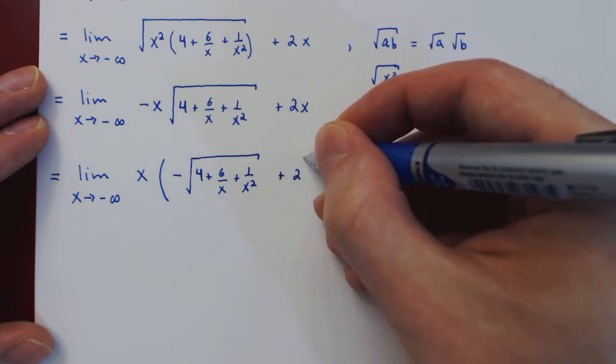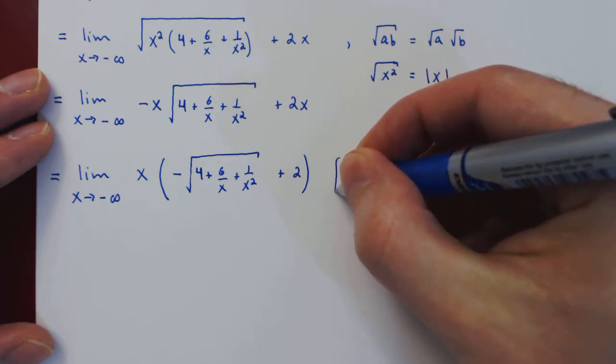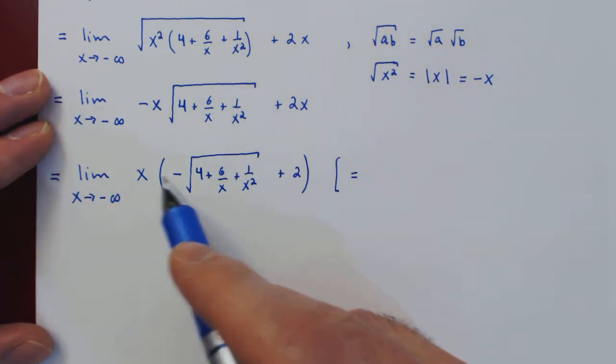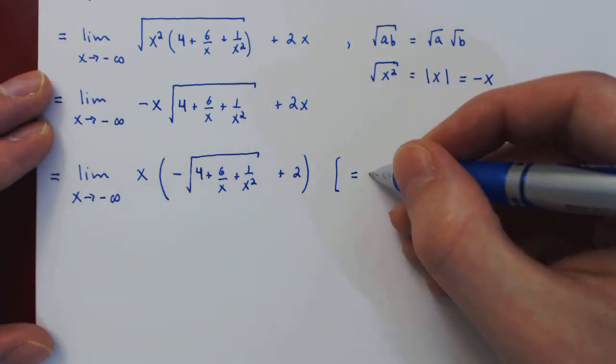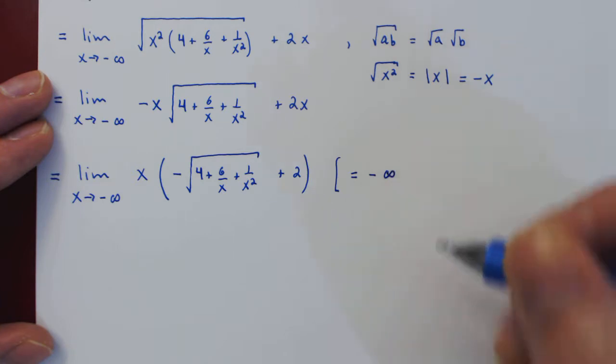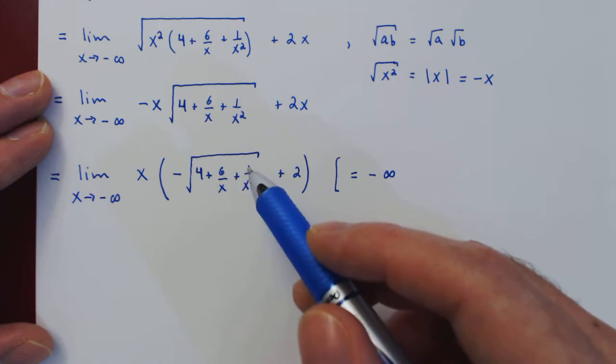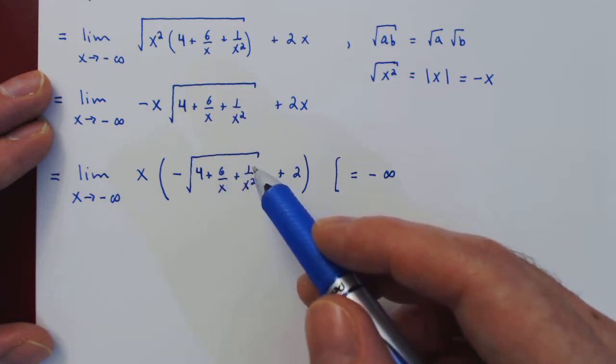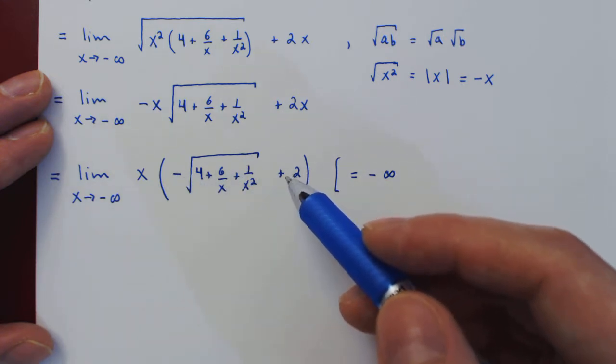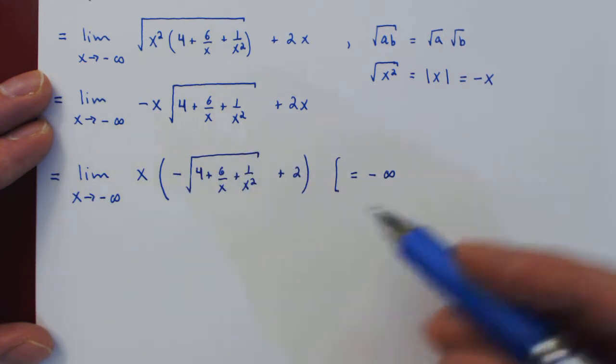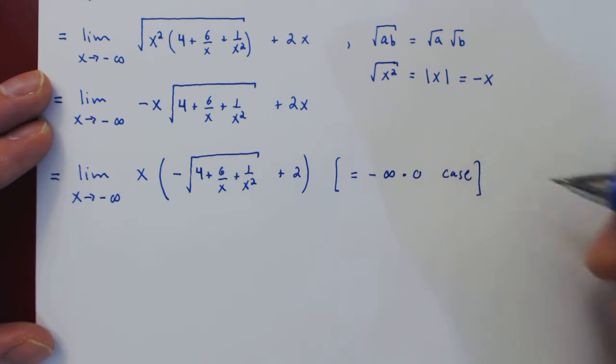So what are we left with? Negative the square root and then positive 2. So the factoring now is complete. Let's see if we've made progress. So we check the case. As x goes to negative infinity, well x goes to negative infinity. And what's happening to the second term? As x goes to negative infinity, 6/x and 1/x² both go to zero, so this would be approaching the root of four which is two. Negative two plus two is zero.